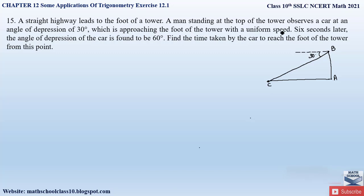The car is approaching the foot of the tower with uniform speed. Six seconds later the angle of depression of the car is found to be 60 degrees, so within six seconds the car moves to point D and now the angle of depression is 60 degrees. The time taken for the car to travel from point C to point D is six seconds. We have to find the time taken by the car to reach the foot of the tower A from point D.